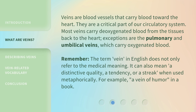Veins are blood vessels that carry blood toward the heart. They are a critical part of our circulatory system. Most veins carry deoxygenated blood from the tissues back to the heart. Exceptions are the pulmonary and umbilical veins, which carry oxygenated blood.